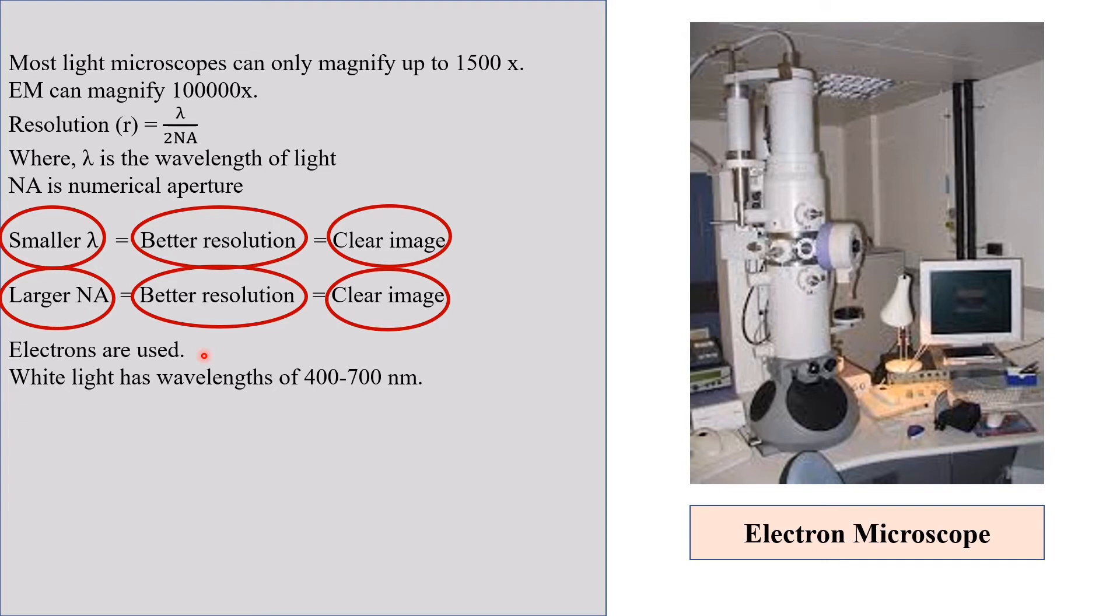Normally in light microscope, we use white light or UV light. White light has wavelengths of 400 to 700 nanometer, whereas UV light has wavelengths of 100 to 400 nanometer.